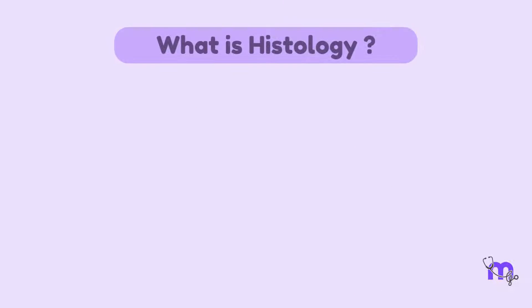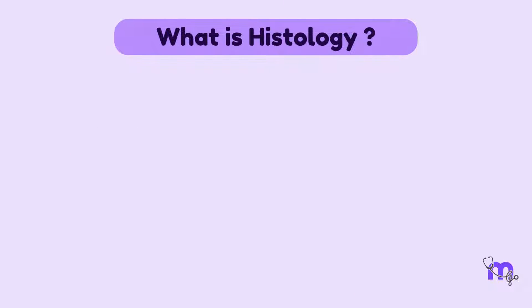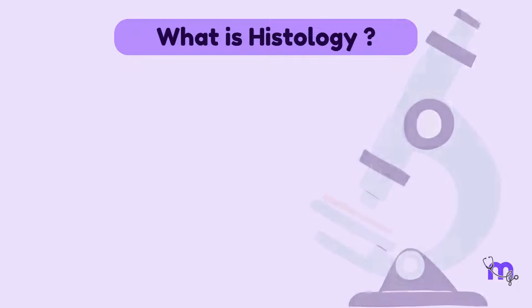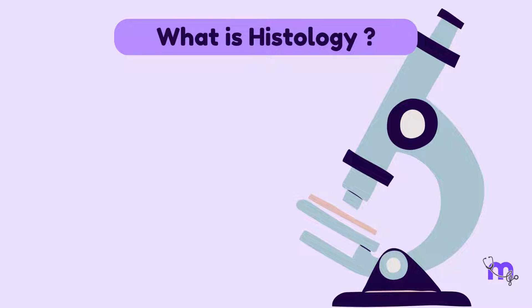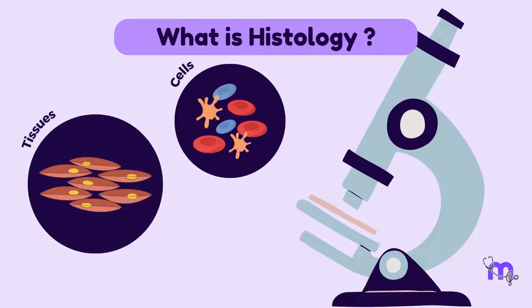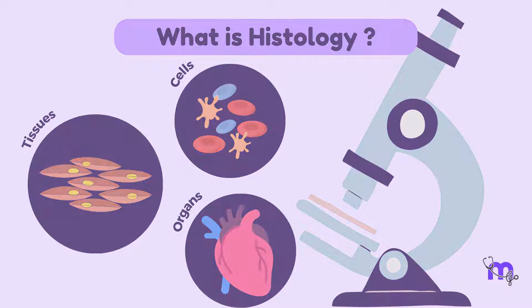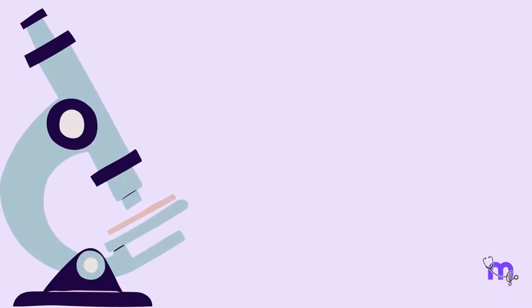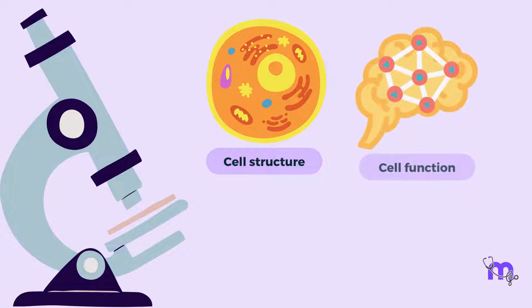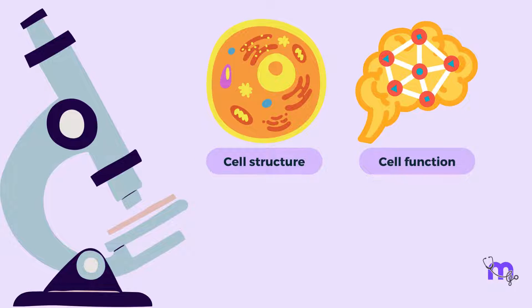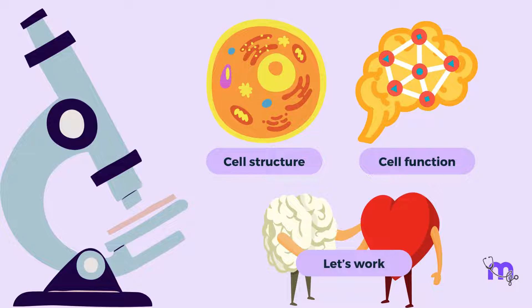Now, what is histology? Histology, or microscopic anatomy, is the study of cells, tissues, and organs under a microscope. A detailed study of a cell's normal structure and function helps us to understand how they work together to participate in complex organ systems.